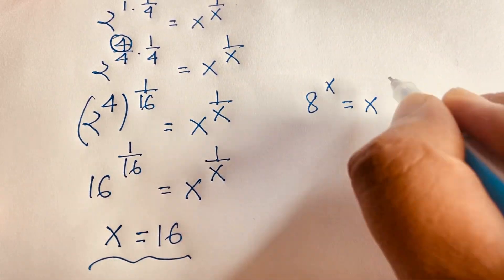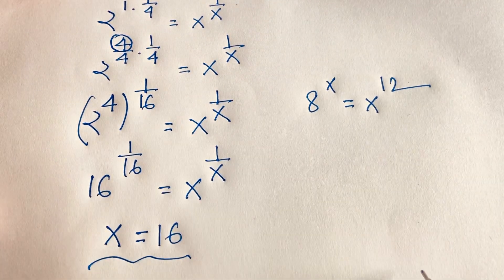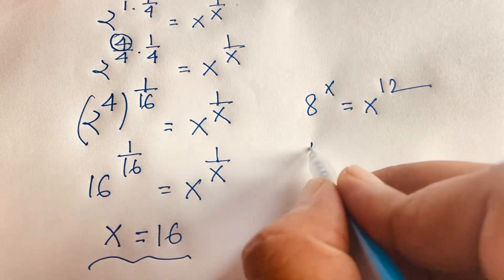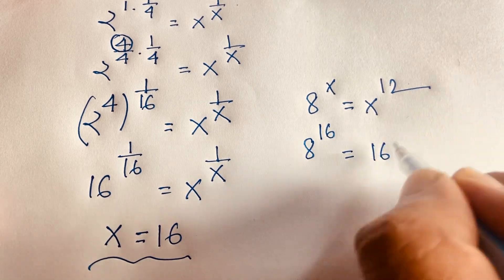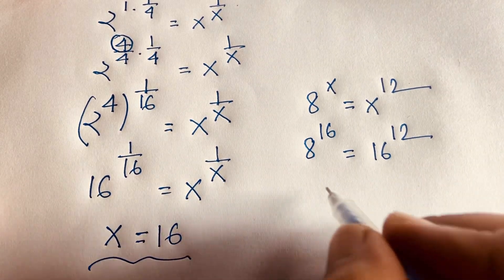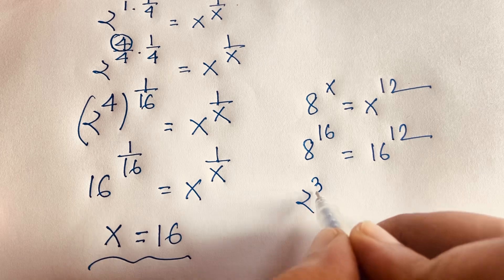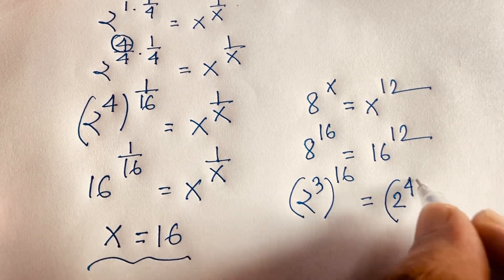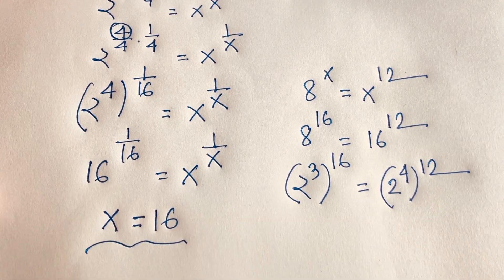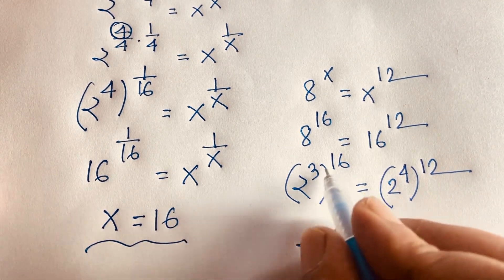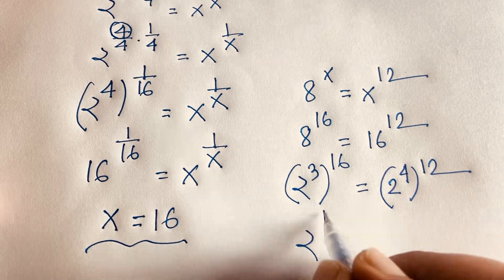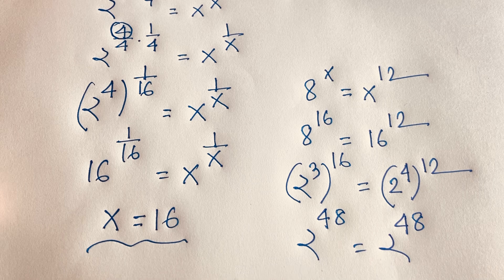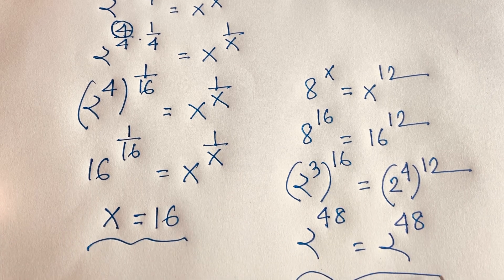Let's verify: our equation is 8 to the power x equals x to the power 12, with x equal to 16. So 8 to the power 16 equals 16 to the power 12. Rewriting: 2 to the power 3, whole to the power 16, equals 2 to the power 4, whole to the power 12. This gives 2 to the power 48 equals 2 to the power 48. Left-hand side equals right-hand side, confirming x equals 16.